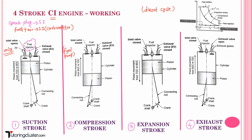The key differences to note: in case of the SI engine, an air-fuel mixture comes inside the cylinder and it is supplied by the carburetor. In case of the CI engine, you have a fuel injector and only air comes inside the cylinder during the suction stroke. The inlet valve is open, the exhaust valve is closed, and the piston moves from top dead center to bottom dead center.